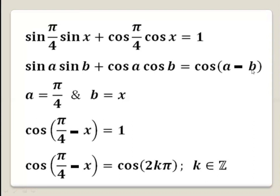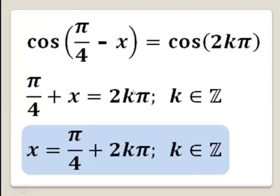So the equation becomes sine(π/4)·sine x plus cosine(π/4)·cosine x equals 1. Recall that cosine(a minus b) equals cosine a·cosine b plus sine a·sine b. With a equals π over 4 and b equals x, this term becomes cosine(π/4 minus x) equals 1. Since 1 equals cosine(2kπ), we get π/4 minus x equals 2kπ, so x equals π over 4 minus 2kπ, or equivalently x equals π over 4 plus 2kπ, where k is an integer.